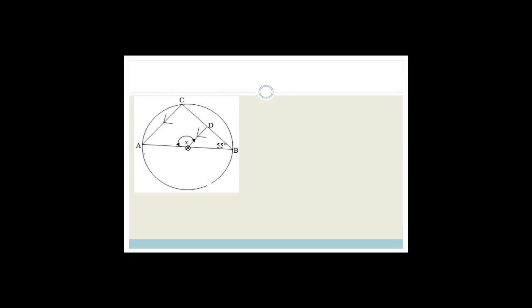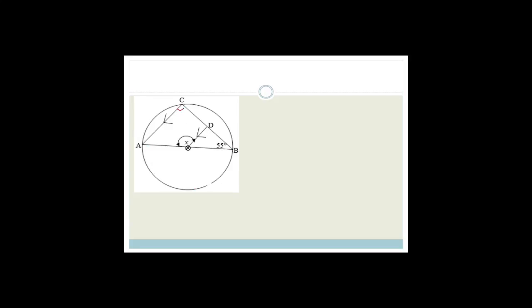We've got a circle with a triangle inside. We notice that this is the diameter because it's going through the center O. What do we know about angles in semicircles? We know that angles in semicircles are 90 degrees, so we immediately know that that angle is 90 degrees. We also know that these lines are parallel, and we've been given that this angle is 55 degrees. They want to know angle X.